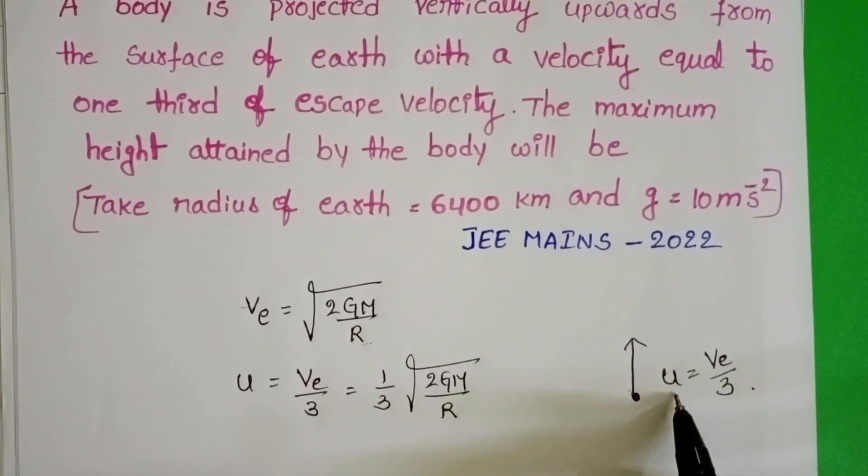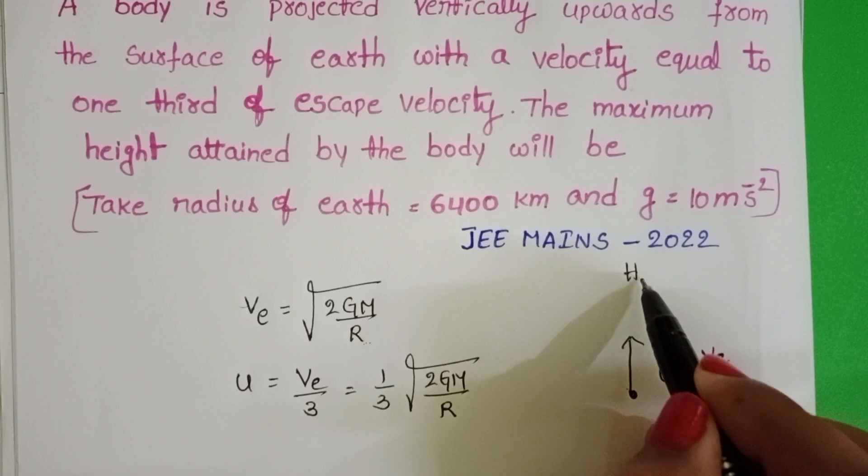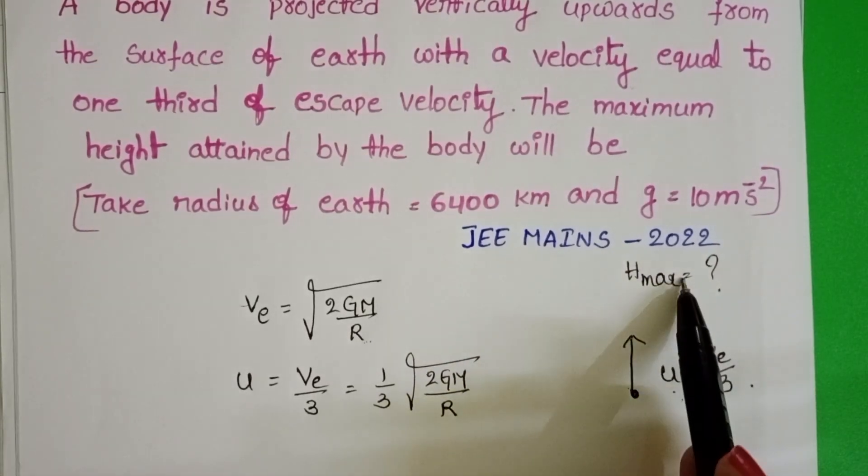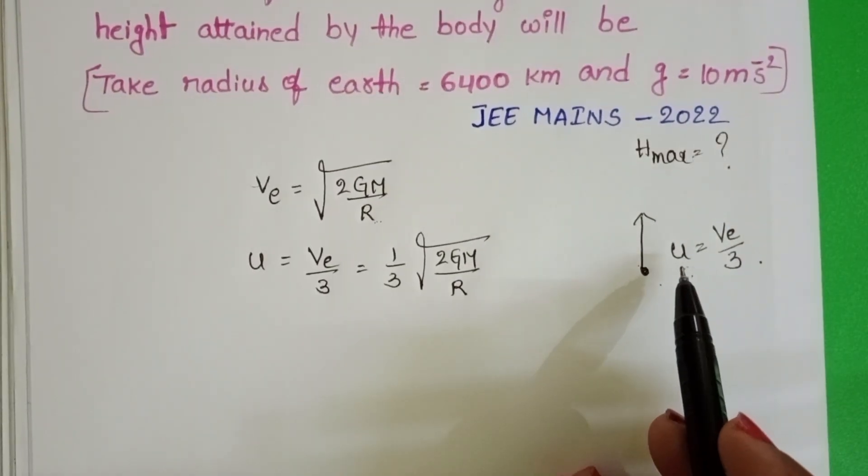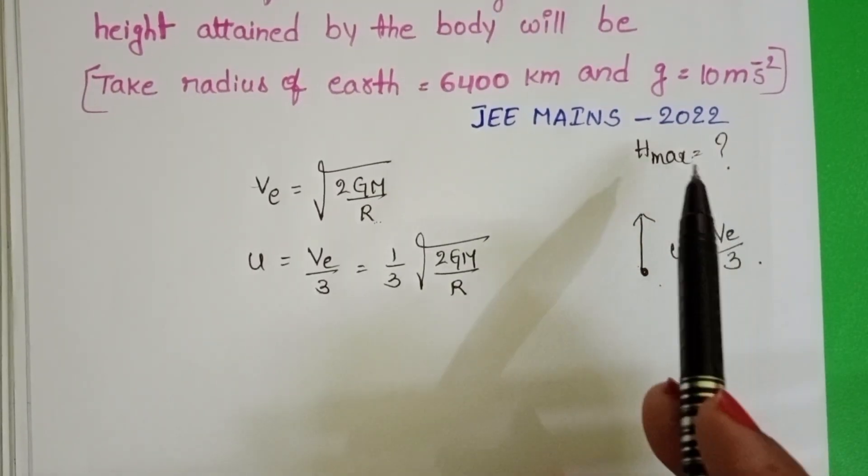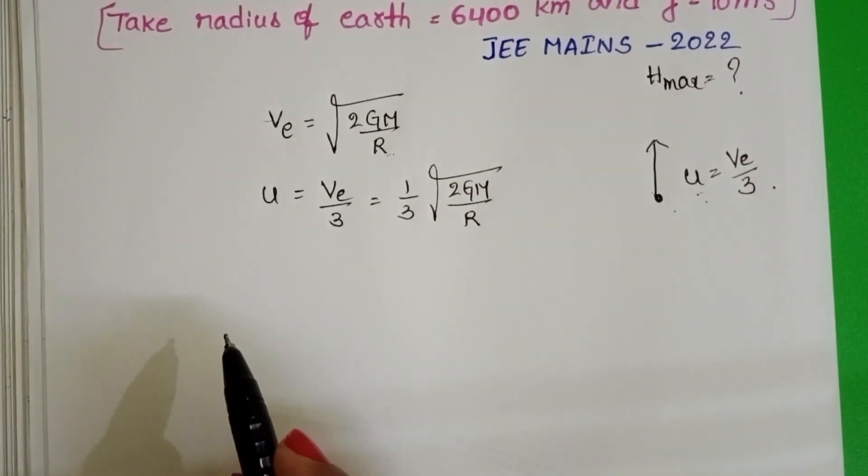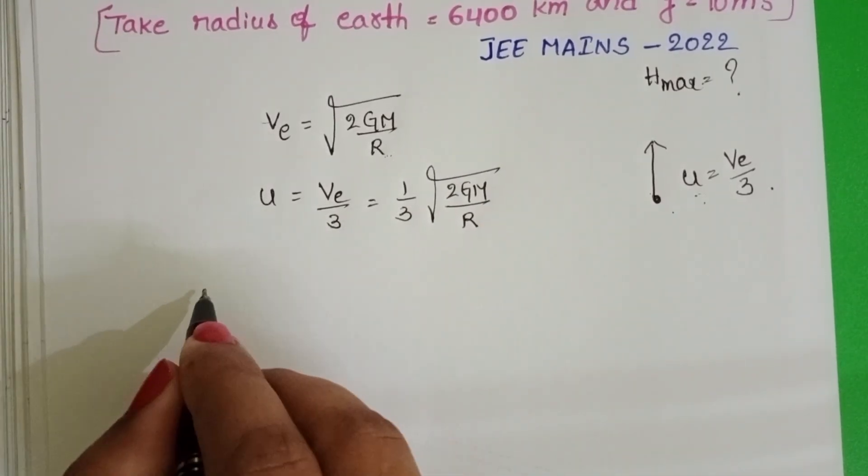So when this body is projected with this velocity, it reaches to maximum height. In this question, we have to find out the height reached by the upward projecting body. By using law of conservation of energy, let us find out the value of maximum height. Total mechanical energy of the upward projecting body on the surface of the earth.